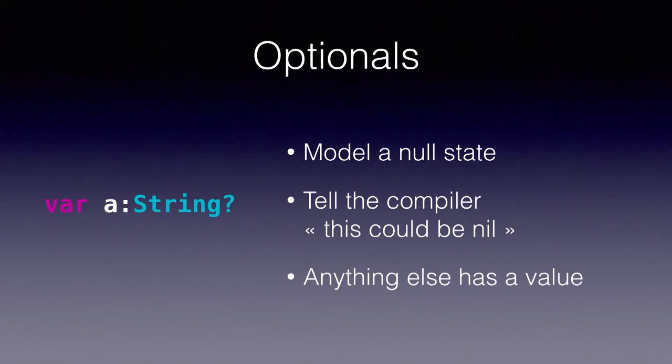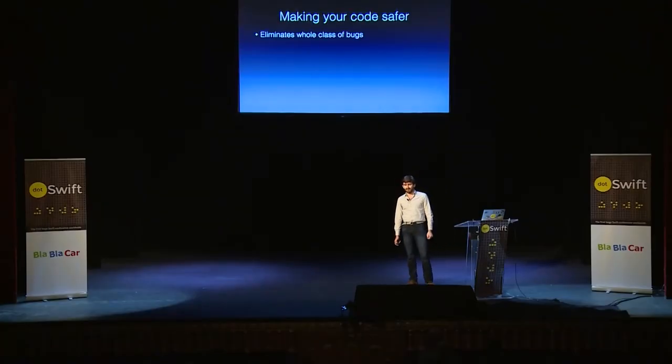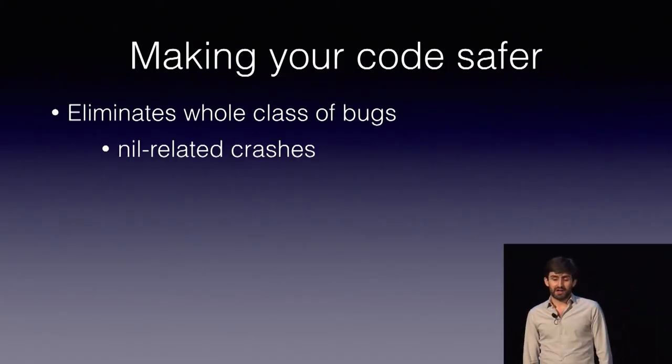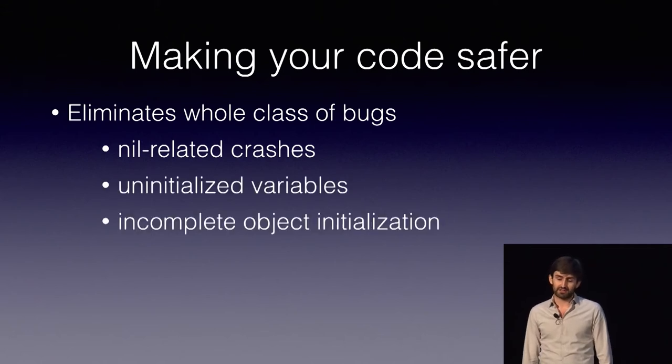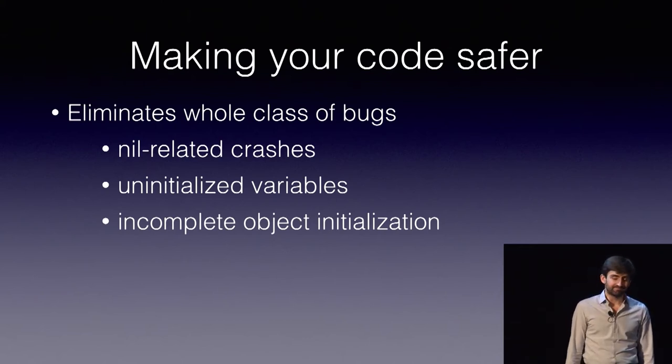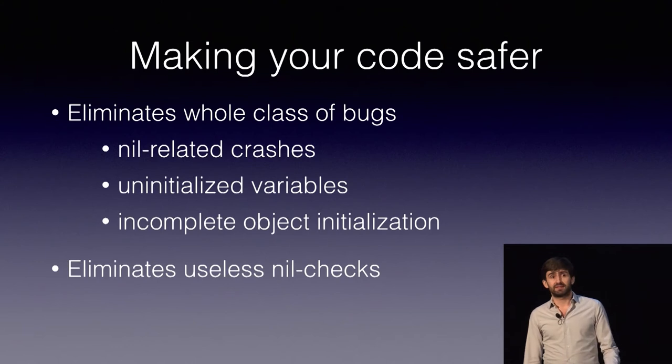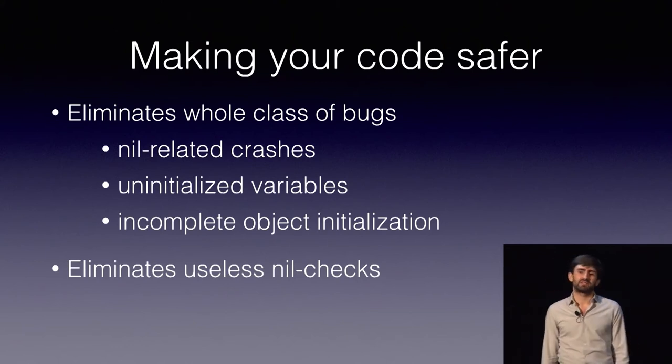You should use optionals whenever you need to model a null state in your objects, whenever you really want to tell the compiler this can be nil. And if it's not optional, it has a value. Note how this is very different from Objective-C or JavaScript — by default, a value is not nil unless you have the question mark. Optionals make your code safer because they eliminate a whole class of bugs: nil-related crashes, uninitialized variables, incomplete object initialization. They also save you from typing useless nil checks, while still forcing you to add them when needed — enforced by the compiler.